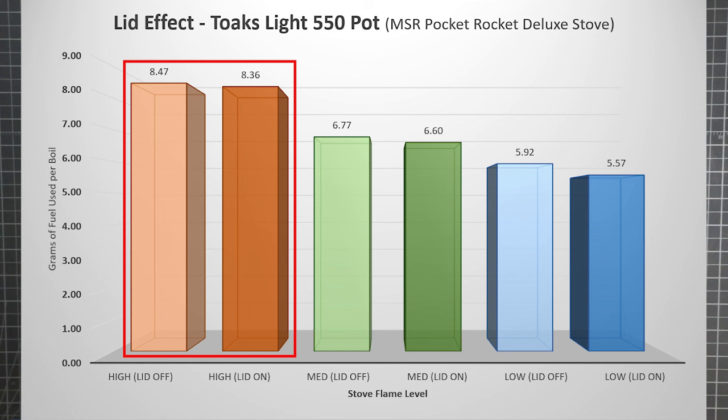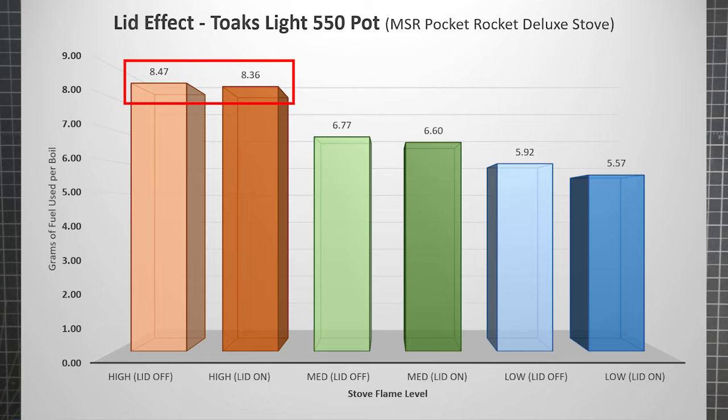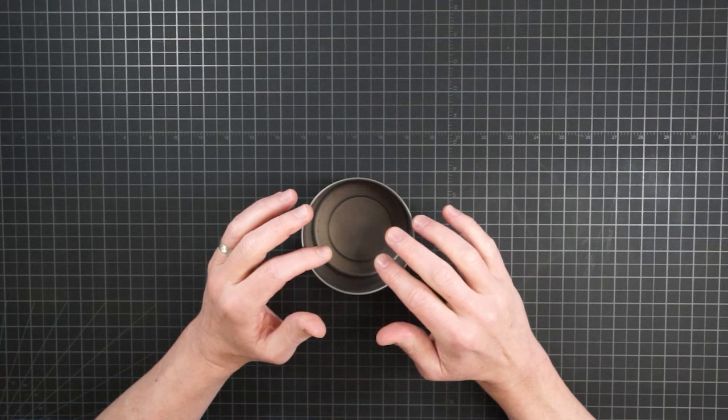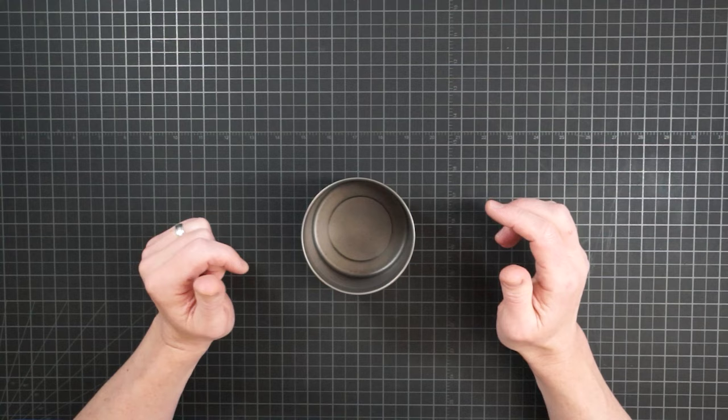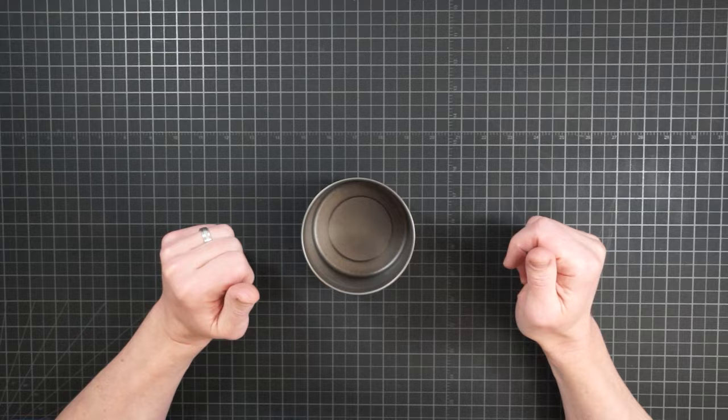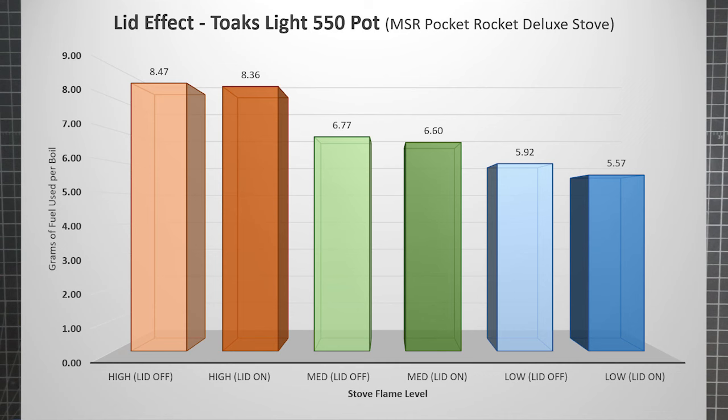So here are the results for the Toks Light 550 pot. You've got lid off and lid on for high, medium, and low flame levels. The numbers are presented in grams of fuel required per boil. So some lid effect was evident in each case. With a high flame though, look how small it was. There was only 0.11, basically just one-tenth of a gram of fuel saved using a lid. A narrow pot limits the surface area of the water to limit cooling even with the lid off, and a high flame pumps heat in fast enough to outpace the effect of lost mechanisms. The end result with this particular combination of pot and flame is that a lid barely makes a difference. A lid is only slightly more efficient under a medium flame, saving you a scant 0.17 grams of fuel.